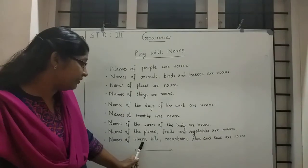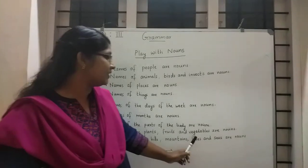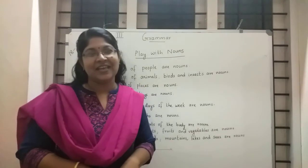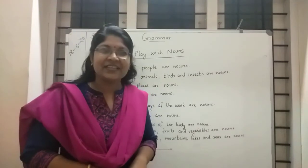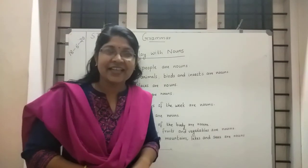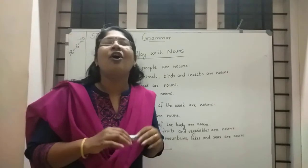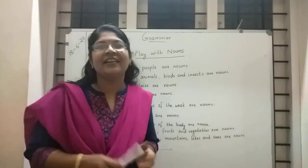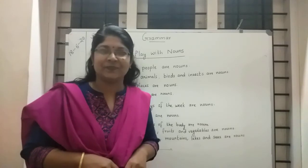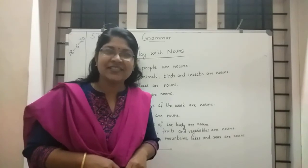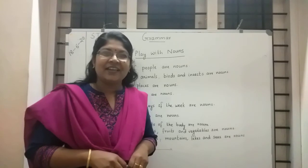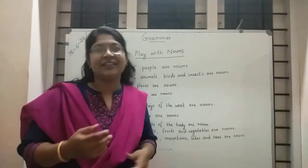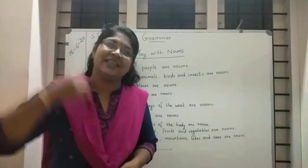Names of rivers, hills, mountains, lakes, and seas are also noun. So in total, we can say that all names are noun. Every name is noun. The name of everything is noun.